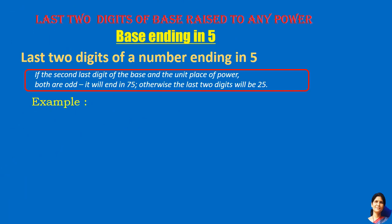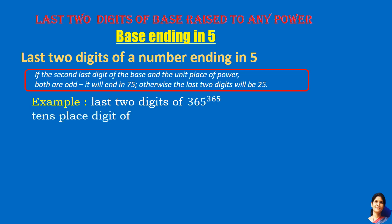Next example: 365 raised to the power 365. The tens place digit of the base is 6, and the units place digit of the exponent is 5. One is even and the other is odd, so the last two digits will be 25.